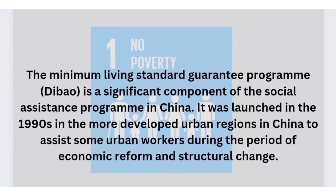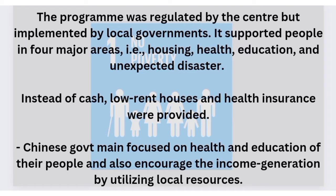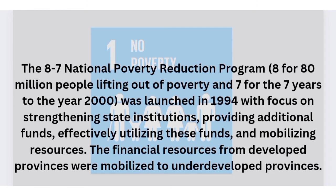In the 1990s, China introduced what is called the biggest poverty alleviation program in history — the Urban Minimum Living Guarantee program. The biggest reason for this program's success was that the central and local governments cooperated with each other. Under this program, people were guaranteed support in four major areas: housing, health, education, and unexpected disasters. People were given low-rent houses and health insurance rather than cash payments.